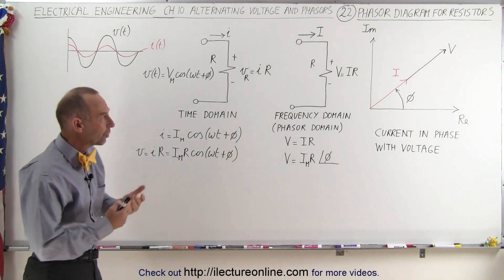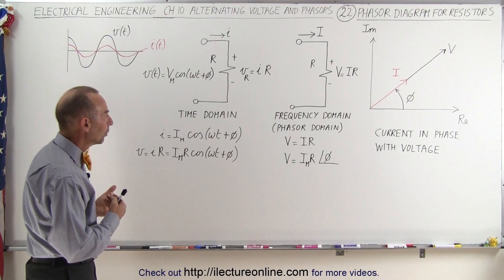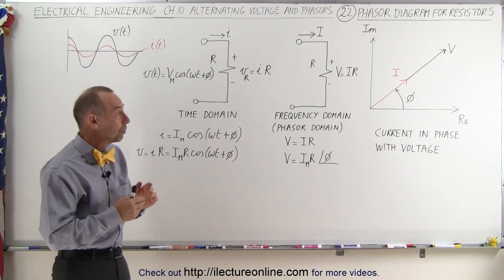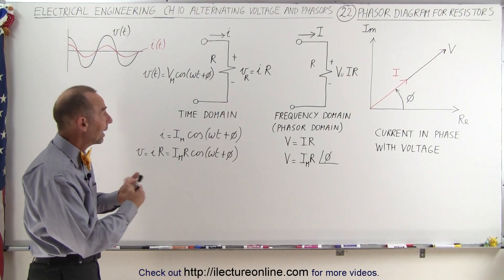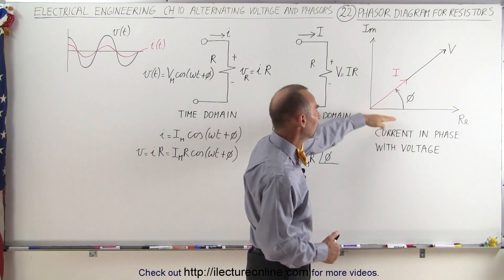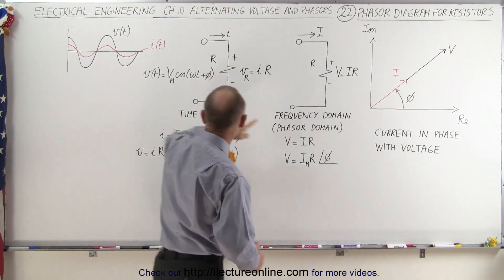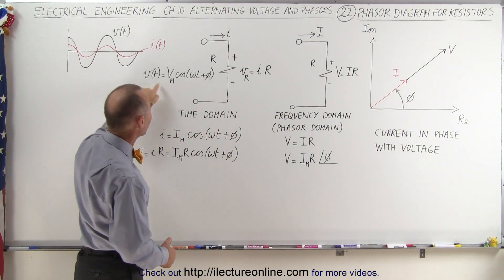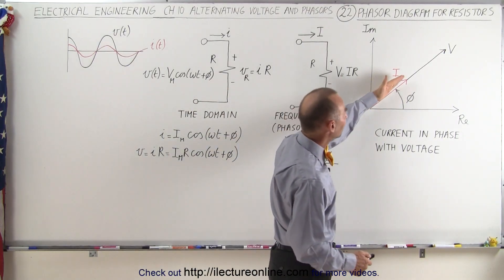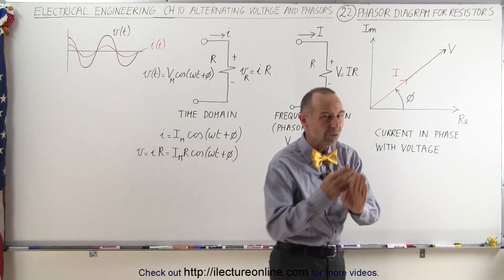What does that look like when we want to draw a phasor diagram? It turns out that with resistors, there's no time lag or gain between the current and the voltage. So when we draw a phasor diagram, notice that the current direction and the voltage direction are in the same direction.